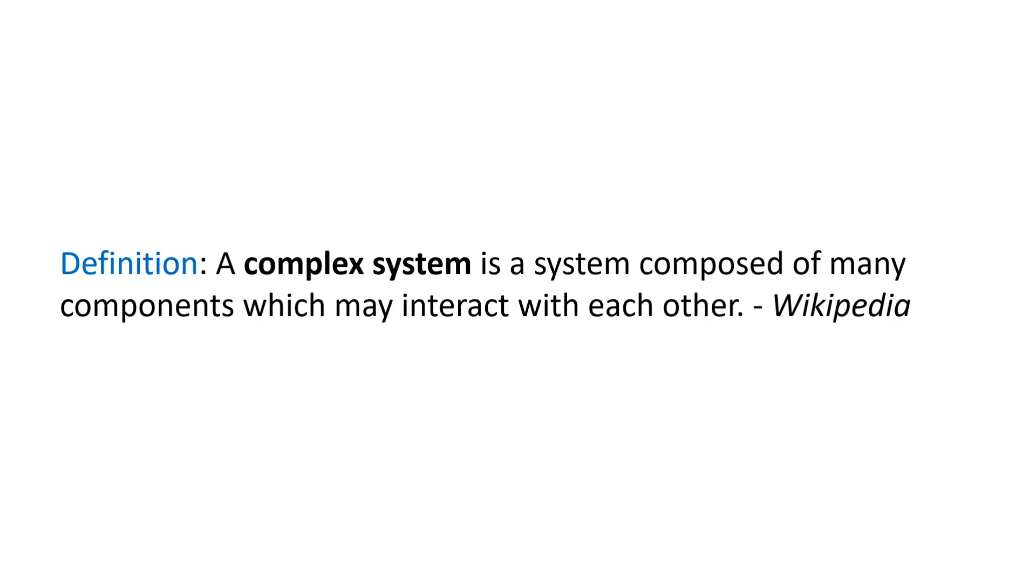The next definition that I want to introduce comes from Wikipedia. And this is the definition of a complex system. Now in system science, the word system and complex system are usually used interchangeably. Most systems that we are concerned with in the real world are complex systems. And every once in a while, we will stress that we mean something that is not a complex system, a simple system, a closed system, or an isolated system. But here's a definition of what a complex system is. A complex system is a system composed of many components which may interact with each other.